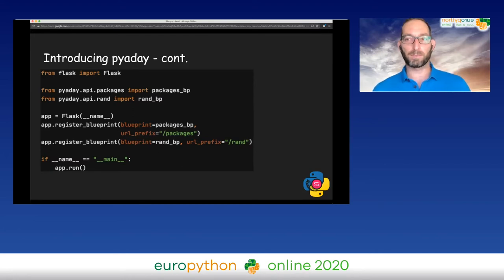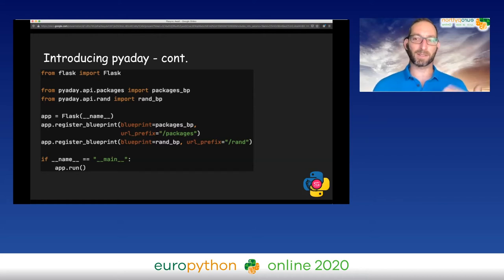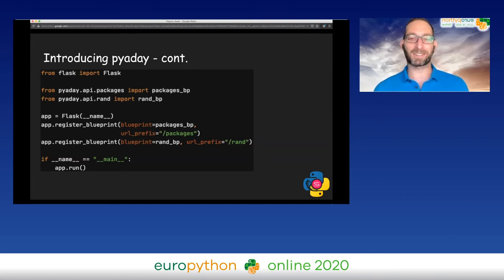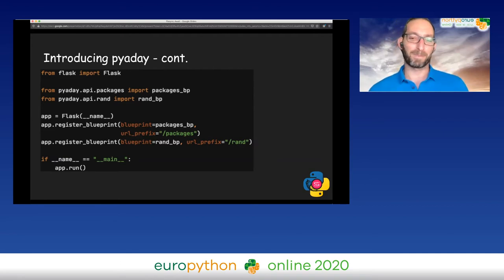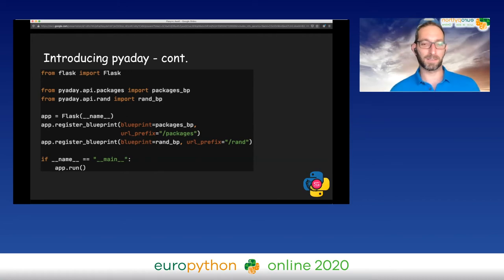This is how the main of the app looks like. You call the Flask constructor and you register two Blueprints — Blueprints for packages and Blueprints for rand. The way I look at Blueprints when it comes to REST, I like to put in one Blueprint all the HTTP methods of a certain REST resource I would like to consume.